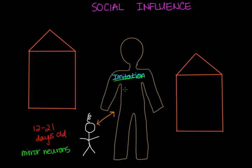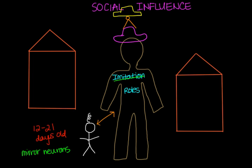The next individual aspect of social influence is the importance of roles. We all have many roles in our life, which we can represent through all the different hats we wear — maybe a brother, a sister, a doctor, a teacher, a friend, a social worker. We usually don't just have one role, and they define who we are and what we do.